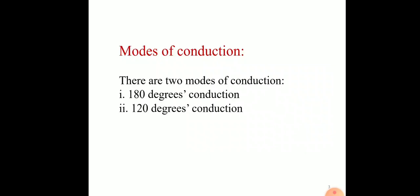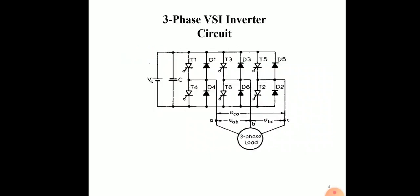There are 2 modes of operation for a 3-phase VSI bridge type inverter. One is 180 degree mode of conduction, the other is 120 degree mode of conduction. In 180 degree mode, the thyristor conducts for 180 degrees, and in 120 degree mode the thyristor conducts for 120 degrees. This is a basic 3-phase VSI bridge inverter circuit. Voltage source is Vs. Thyristors T1, T2, T3, T4, T5, T6 are connected in bridge form.